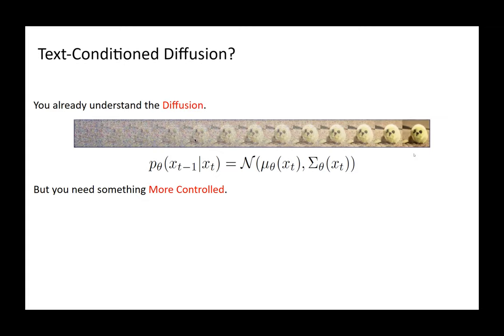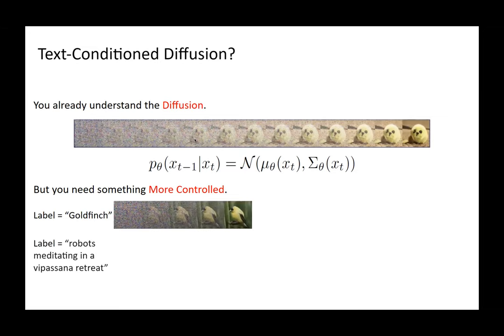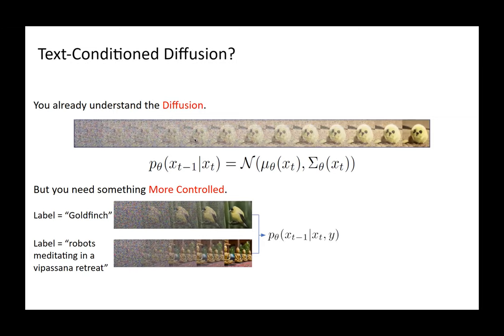What you want is more control — something like a label such as 'a goldfinch,' or something more detailed like 'robots meditating in a persona retreat.' So your problem changes: previously you were generating x_{t-1} given x_t, but now you are generating x_{t-1} given x_t with some text condition. That's why we call it a text-conditioned diffusion model. One simple approach is to pass the label to a transformer, get an embedding, and use it with your noisy image to generate a less noisy image.